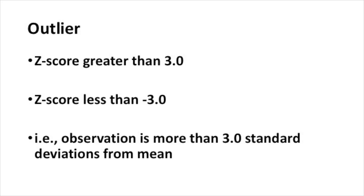You interpret the z-score as the number of standard deviations that an observation is either above or below the mean. A positive z-score tells you the observation is greater than the mean; a negative z-score tells you it's less than the mean. For example, a z-score of 2.5 means the observation is 2.5 standard deviations above the mean, while a z-score of minus 1.4 means it's 1.4 standard deviations below the mean. The cutoff we typically use to identify an outlier is a z-score greater than 3 or less than minus 3 — more than 3 standard deviations from the mean.